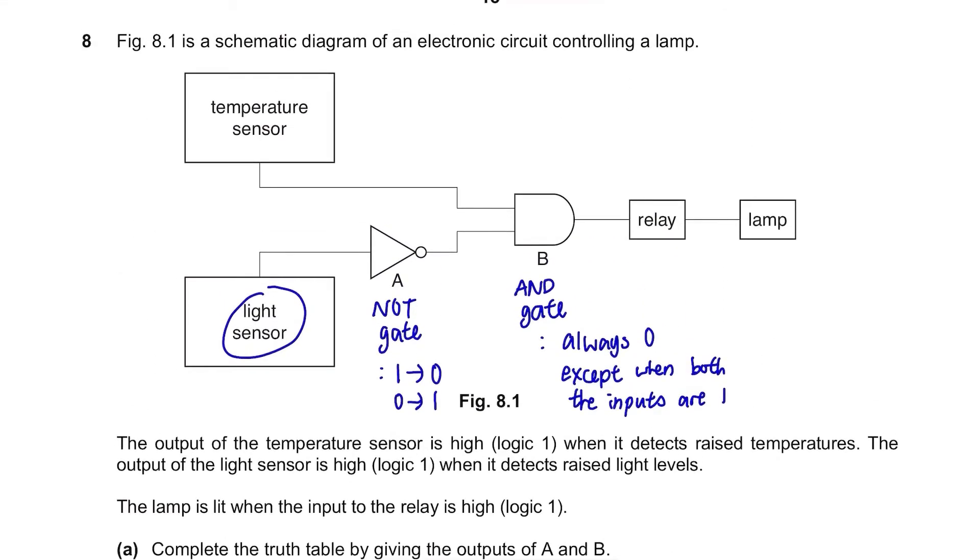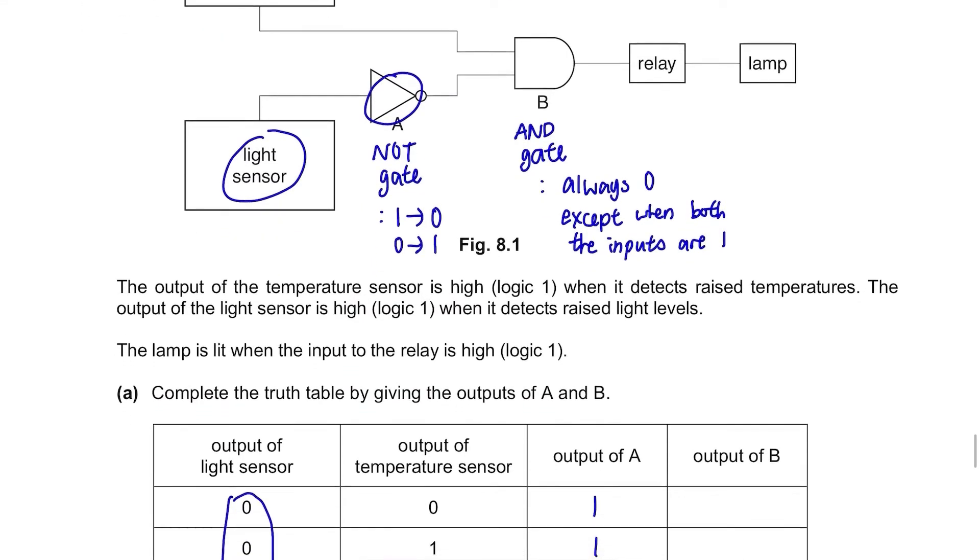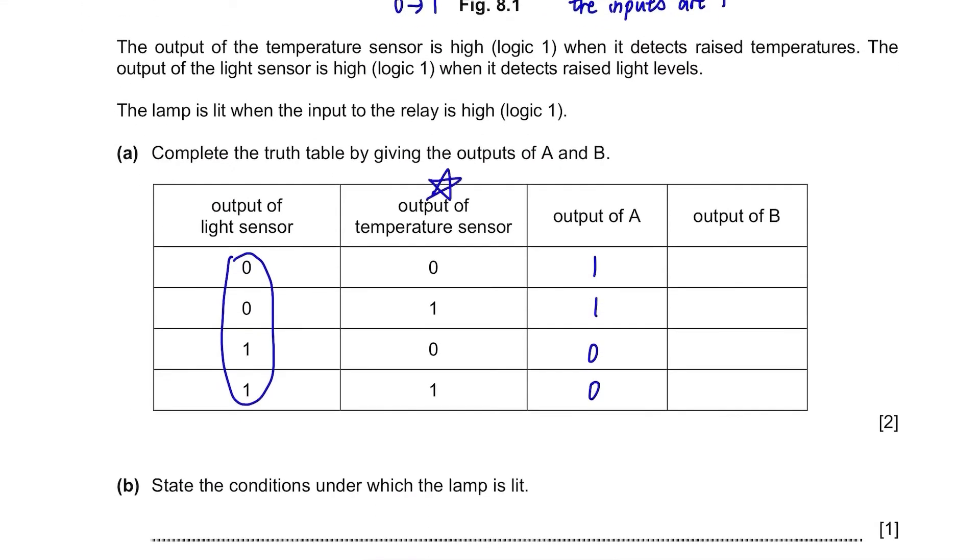B is connected to the temperature sensor and A, so we need to look at these two columns. It's an AND gate, so 0-1 will give 0, 1-1 will give 1, 0-0 will give 0, 1-0 will give 0. The table is complete.